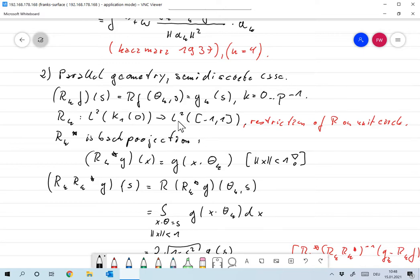And we view Rk as an operator from L2 of the reconstruction area. So we assume that the support of F is in the unit circle. This should go to L2, because we need Hilbert spaces. And if F is supported in the unit circle, then Rf of theta K and S is in the interval from minus 1 to 1. So we view this as an operator from the unit circle to the interval from minus 1 to 1.